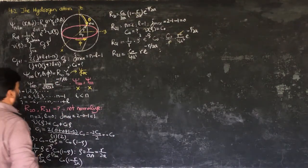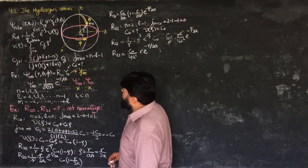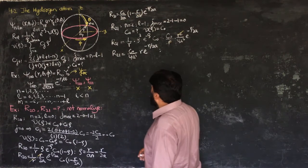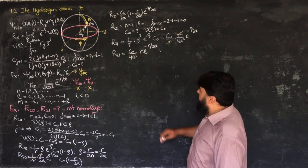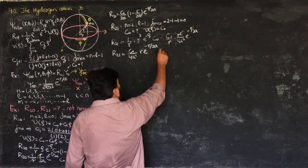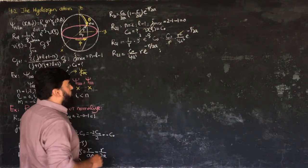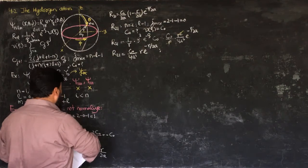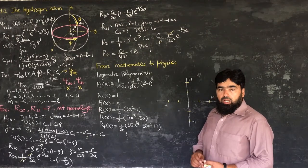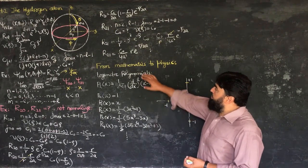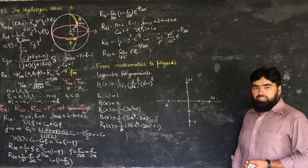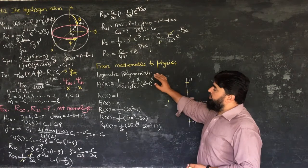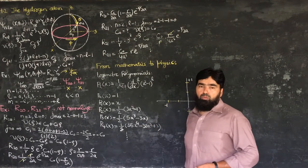The solution of the Schrödinger equation gives us a way to calculate any wave function. This is why it is a remarkable solution — we can now theoretically calculate any state of the hydrogen atomic system.